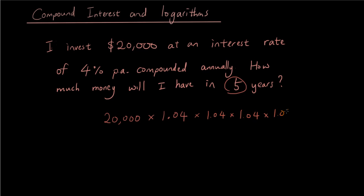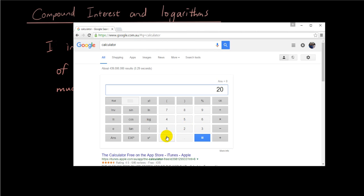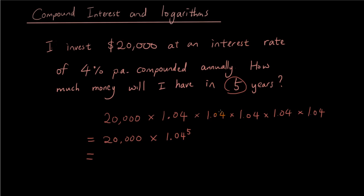That's a lot of times to write it, so the quicker way is to write 20,000 times 1.04 to the power of 5, and put that in your calculator. 20,000 times 1.04 to the power of 5 gives you $24,333. That is how much money you're going to have at the end of five years.